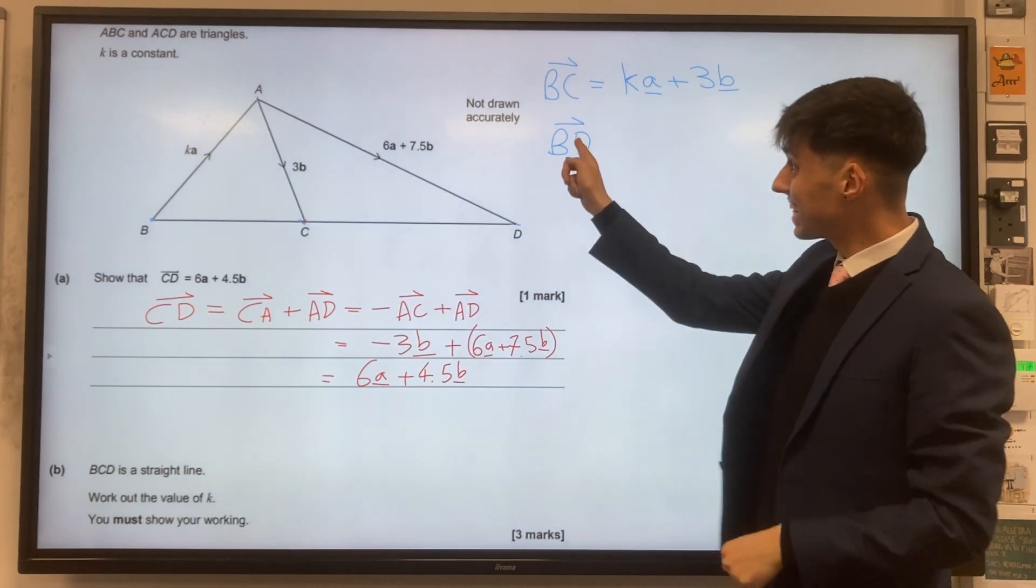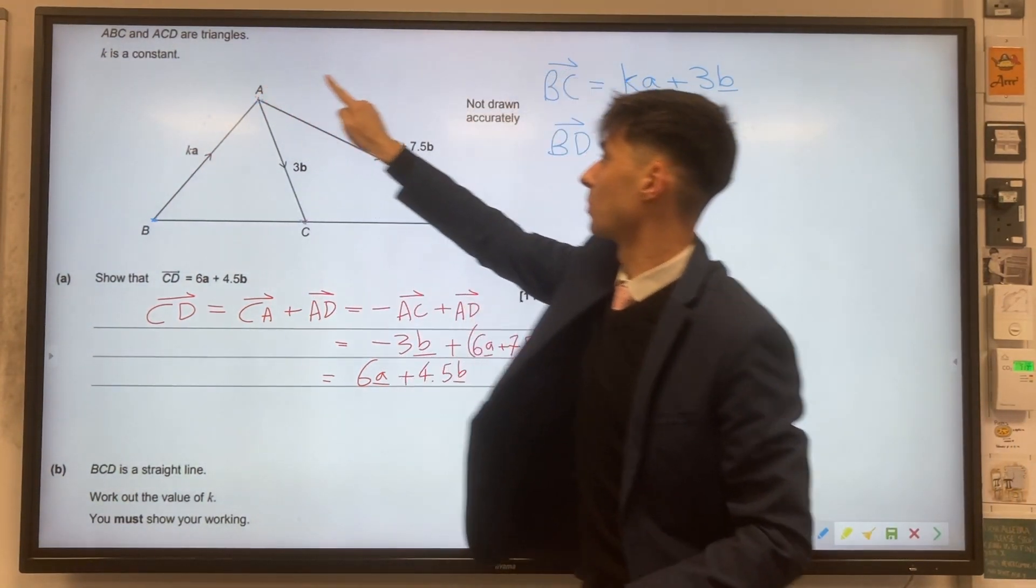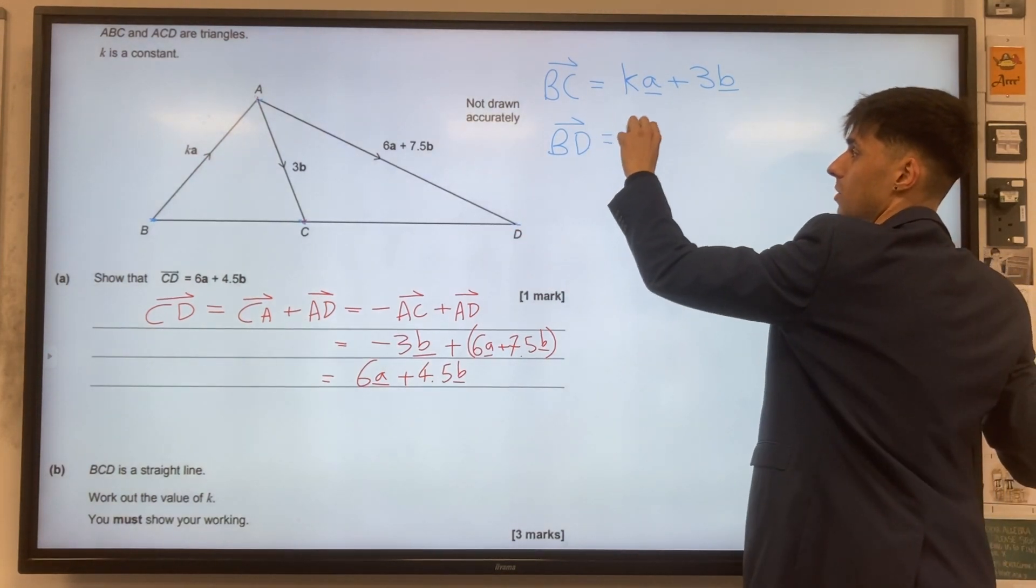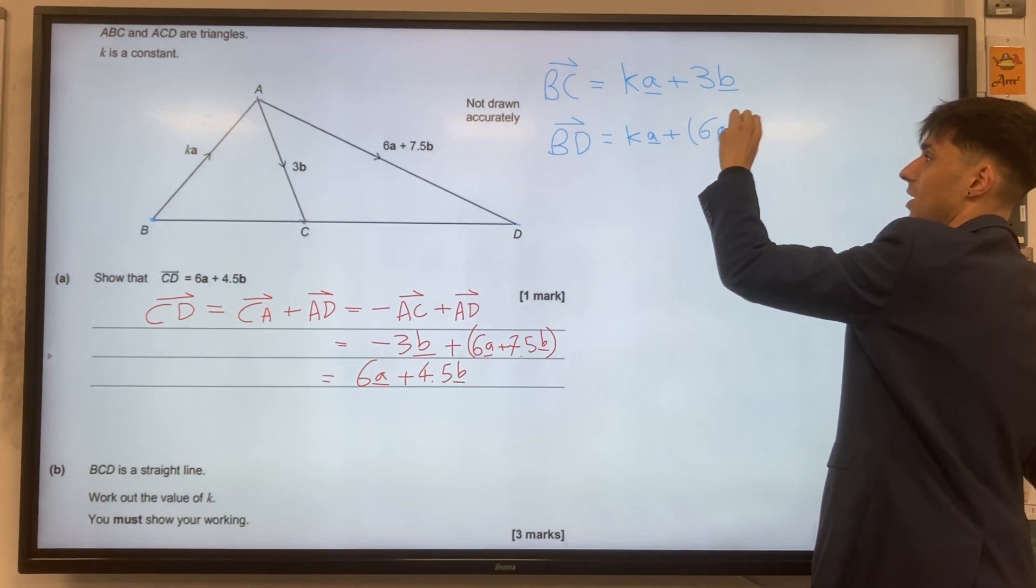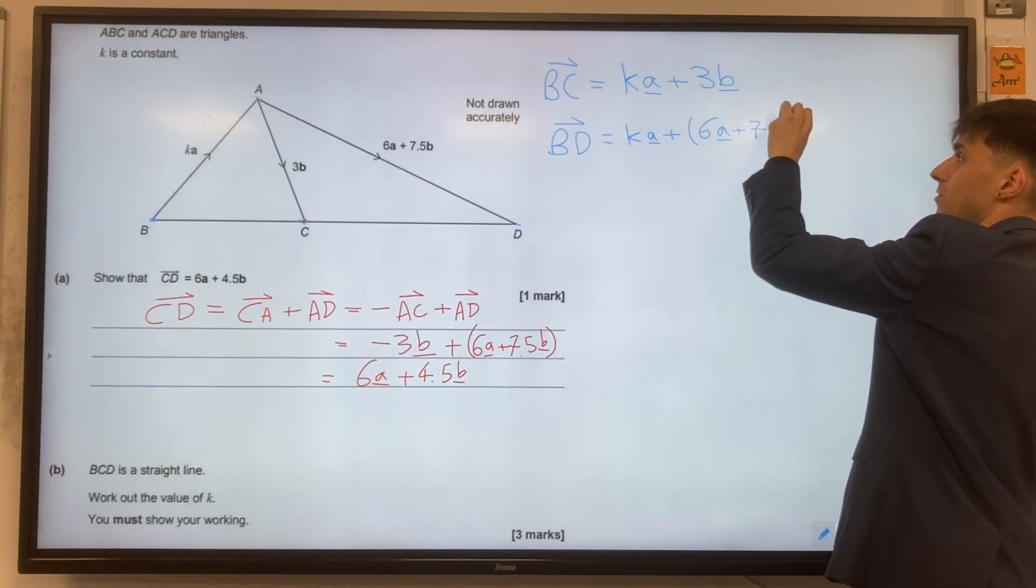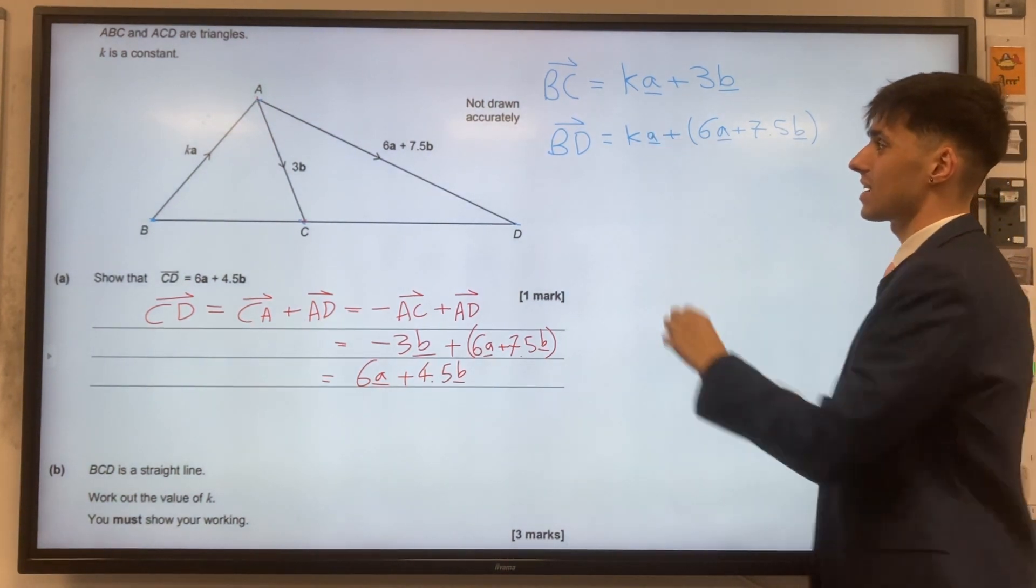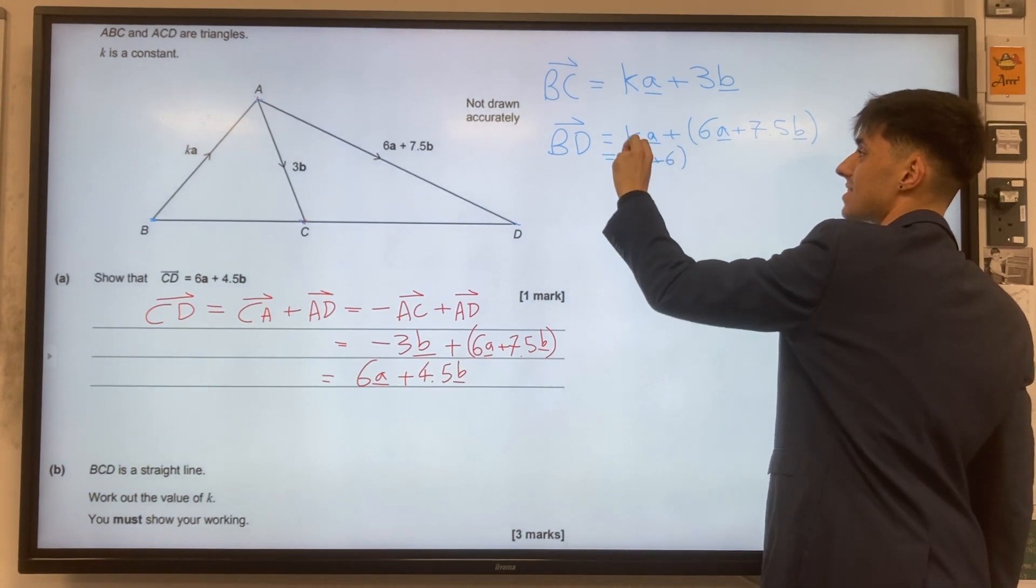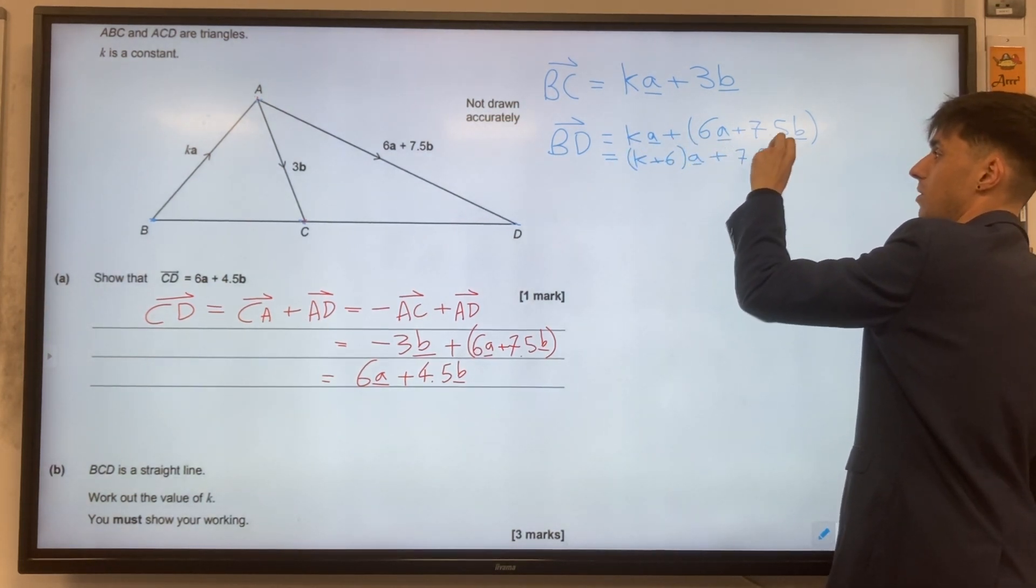And from B to D, this vector, we also do KA. And then we add our 6A plus 7.5B. So we've got KA plus 6A plus 7.5B. And I'm going to factorise my A's here to make it a little bit nicer. We've got K plus 6 A's plus 7.5B.